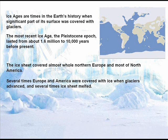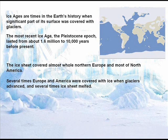Ice Ages are times in the Earth's history when a significant part of its surface was covered with glaciers. The most recent Ice Age, the Pleistocene Epoch, lasted about 1.6 million to 10,000 years before present. The ice sheet covered almost all of northern Europe and most of North America. Several times Europe and America were covered with ice when glaciers advanced, and several times the ice sheet melted.